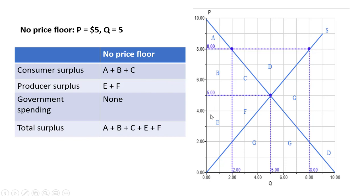Producer surplus is going to be the triangle underneath that, the difference between the $5 and the supply curve up to the last unit consumed. So E and F. The government is not involved in this market right now, so there is no government spending. And total surplus then is just A plus B plus C plus E plus F.